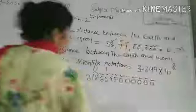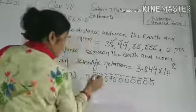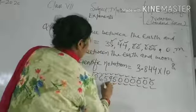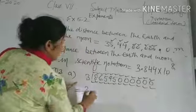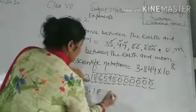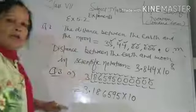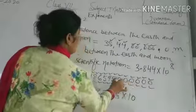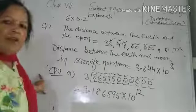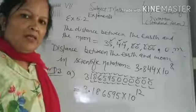Similarly, for the third question, we write another large number in standard form. Counting the places for the decimal — 1 through 12 — it moves 12 places. The result is 3.18695 into 10 raised to power 12. In this way, we write even large numbers in scientific notation or standard form.